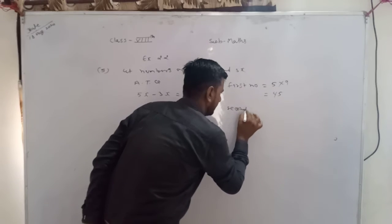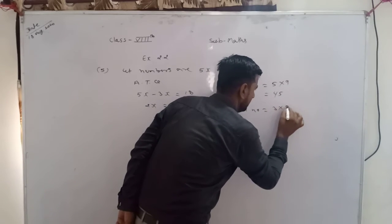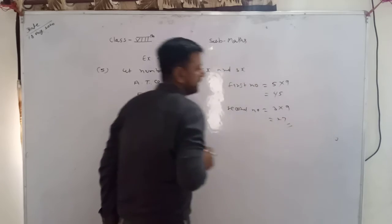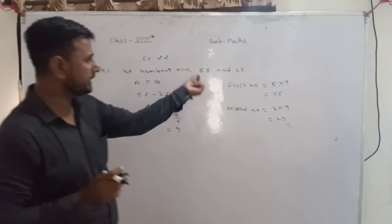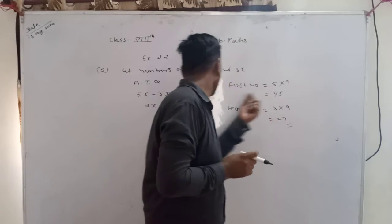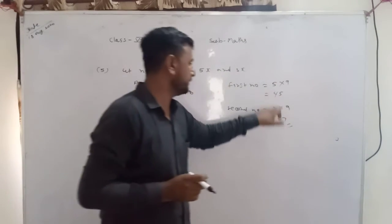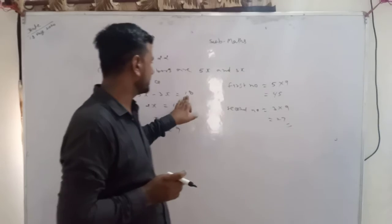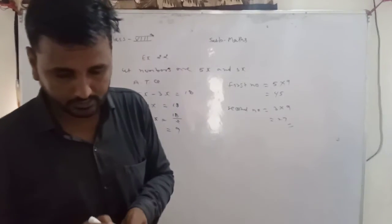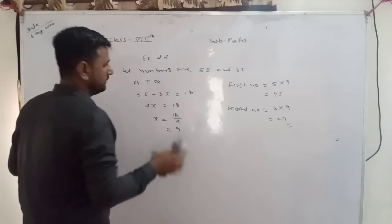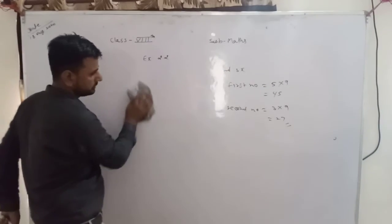Second number 3x है: 3 into 9 = 27। तो second number क्या हो गया: 27। अगर अपने को check करना है कि अपना answer right है या wrong है, तो अपने को दोनों का difference देखो। 45 minus 27 = 18 आ रहा है, तो right है।